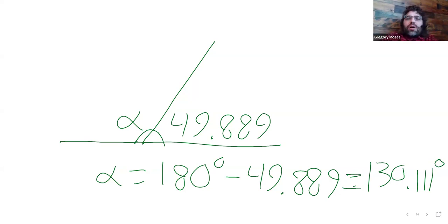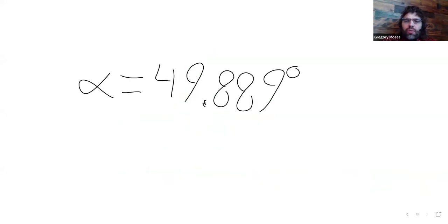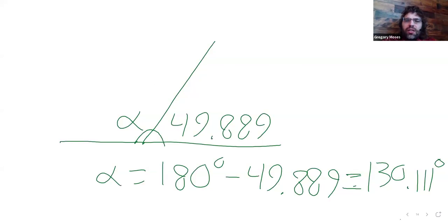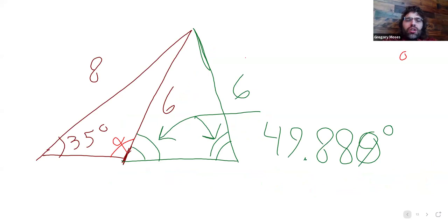So in the textbook, there's a very detailed breakdown of when this case can occur. I would say that rather than worry about that breakdown, we should just be able to recognize it when it does occur. Like here, we get 49.889, and we look at the triangle, and we look at this alpha, this angle we're looking for, and we say that can't be right.